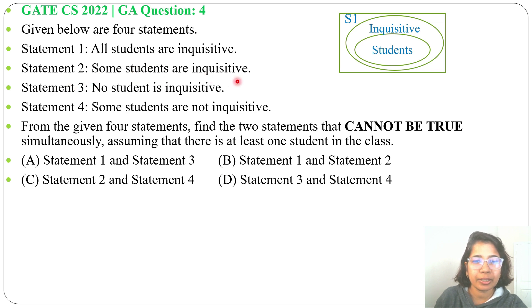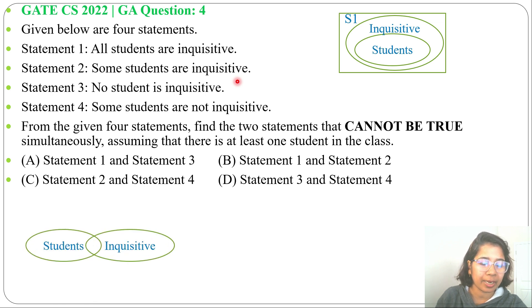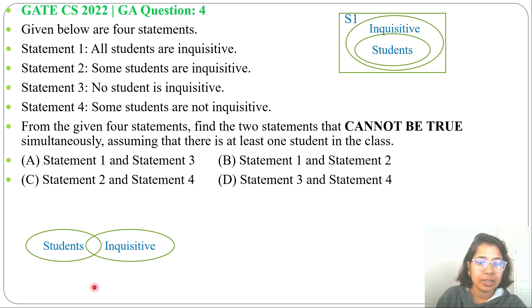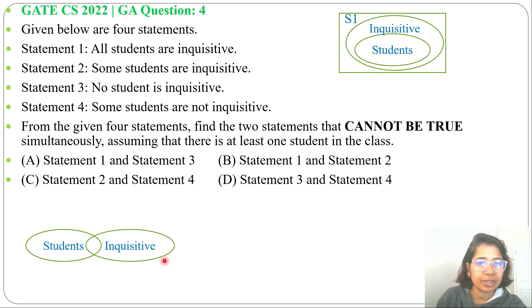Statement 2: Some students are inquisitive. So if student is one set and inquisitive is another set, then they will overlap. The students that are in both sets come under 'some' — some students are inquisitive, specifically those in the intersection.